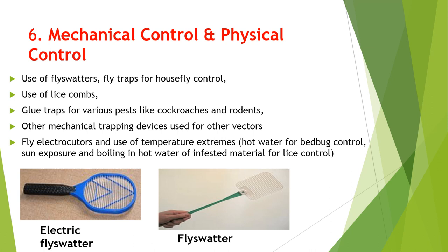The next method is mechanical and physical control. Here we can use fly swatters and fly traps for housefly control. There are also electric fly swatters, mechanical fly swatters, fly screens, and glue traps for various pests like cockroaches and rodents. Other mechanical trapping devices can be used for other vectors.